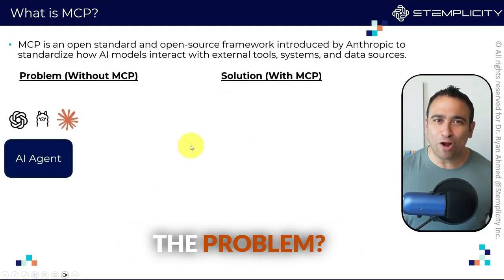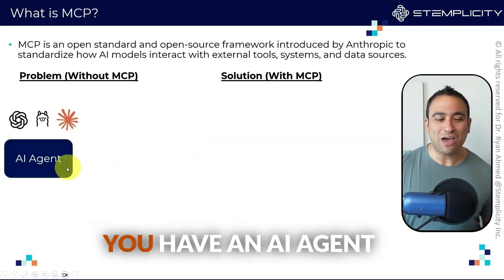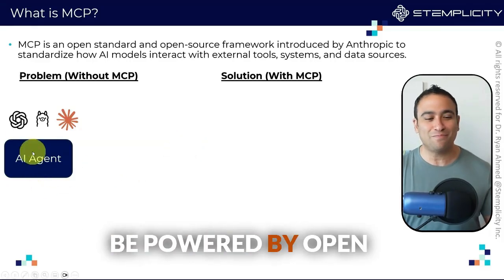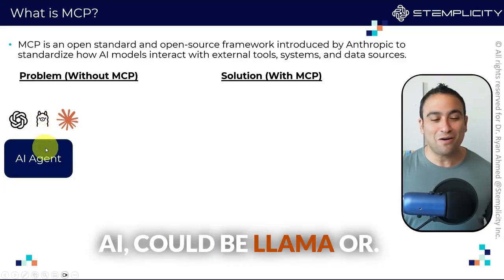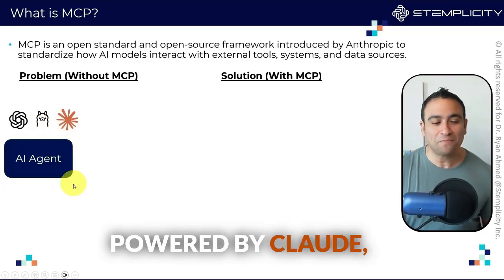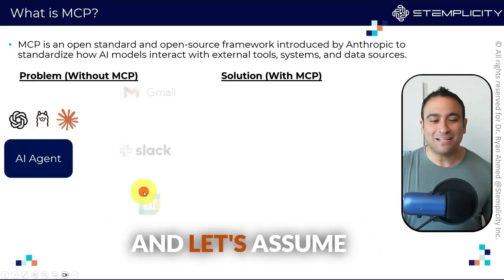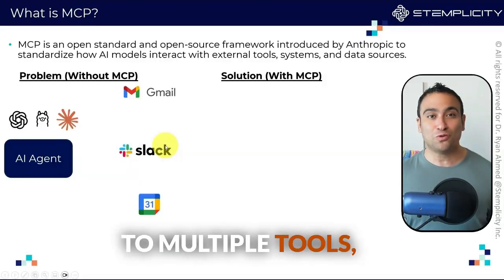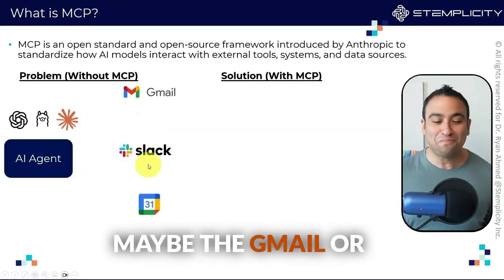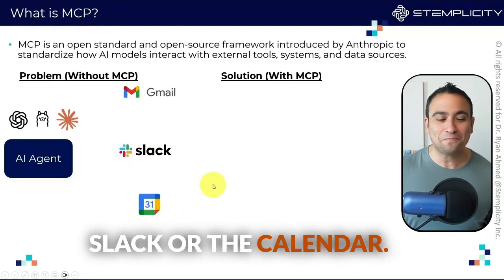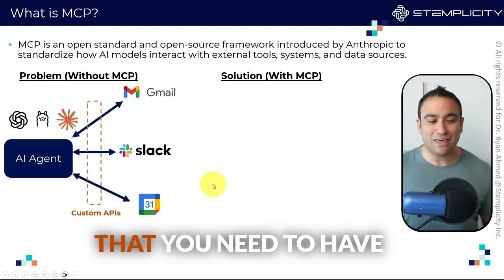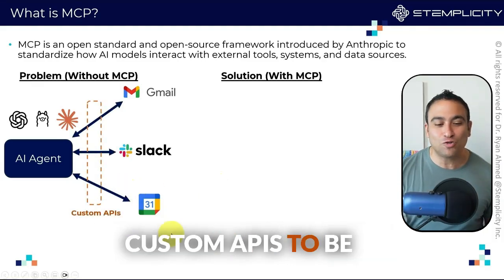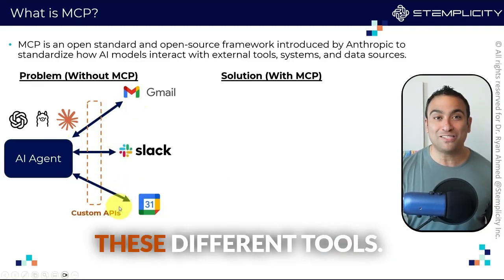So what is the problem? Let's assume that you have an AI agent — this AI agent could be powered by OpenAI, could be Llama, or powered by Claude — and let's assume that AI agent would like to talk to multiple tools: maybe Gmail, Slack, or a calendar. The issue before was that you needed custom APIs to be able to talk to all of these different tools.